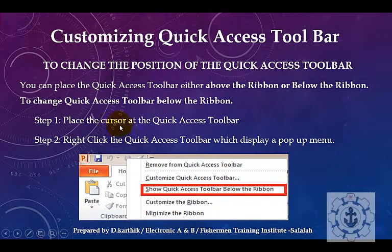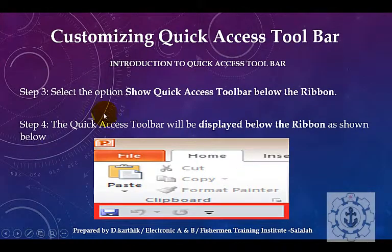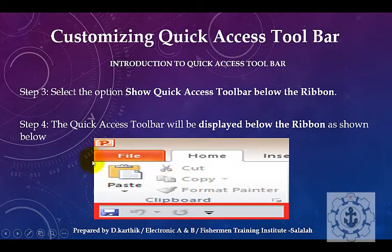Step 1: Place the cursor on the Quick Access Toolbar. Step 2: Right-click the Quick Access Toolbar, which displays a pop-up menu. Step 3: Select the option 'Show Quick Access Toolbar Below the Ribbon.' Step 4: The Quick Access Toolbar will be displayed below the ribbon.